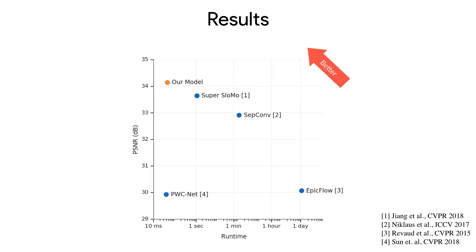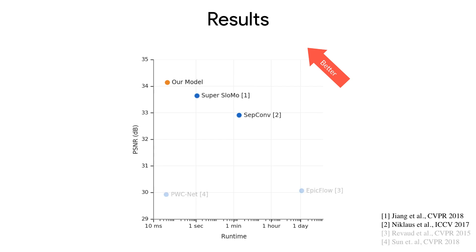Here we show performance on an evaluation dataset we constructed, where we recorded super slow motion video to get motion blur input-output pairs. The y-axis represents PSNR, where higher is better, and the x-axis represents runtime and is in log scale. When compared against using optical flow, our method is a lot higher quality. And when compared against directly using frame interpolation, our method is still higher quality and a good amount faster.